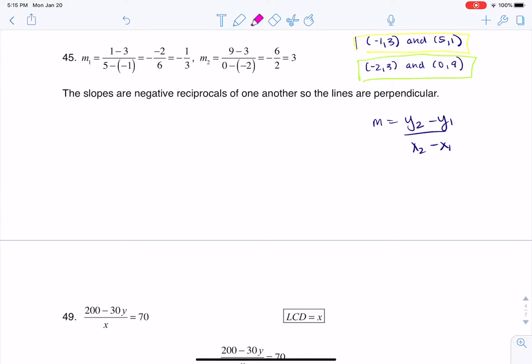So for example, in this first slope calculation you see me subtracting the y coordinates here. I did 1 minus 3, and then I also subtracted or put that in ratio to the difference of the x coordinates. When I simplified that slope, I found out that slope was negative 1/3.